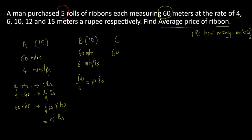Same way, roll C - length is 60 meters. The price is 10 meters per rupee, so it is probably a lower quality ribbon. That's why more length is available in one rupee. So it is going to be 60 by 10, that is 6 rupees.